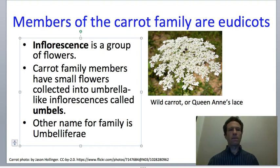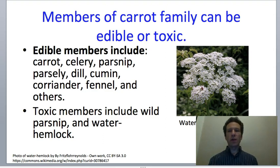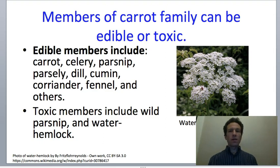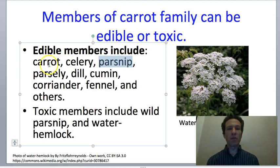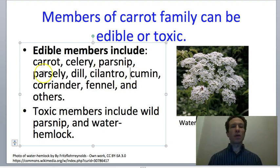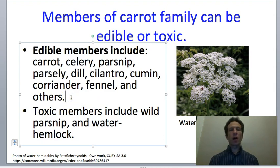Carrots are an obvious edible member of the carrot family. The carrot family includes several edible members, especially things with strong flavors used as herbs or spices. Edible members include carrot, celery, parsley, parsnip—which is common in England and Canada and looks fairly similar to a carrot—as well as dill, cilantro, cumin, coriander, and fennel. The list goes on; all of those are delicious and certainly edible.